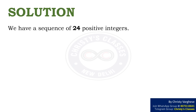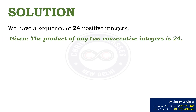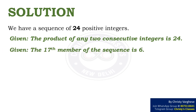Solution: We have a sequence of 24 positive integers. It is given that the product of any two consecutive integers is 24. Also, the 17th member of the sequence is 6.